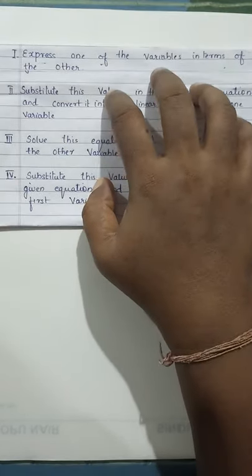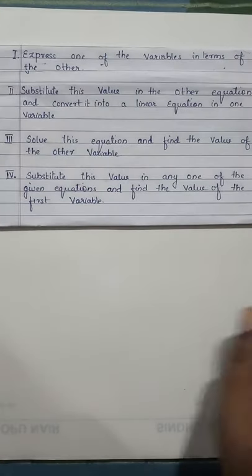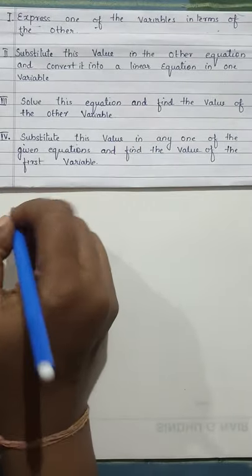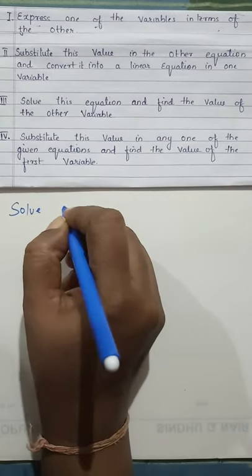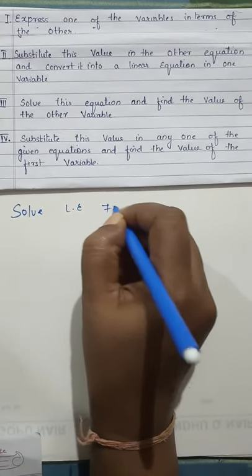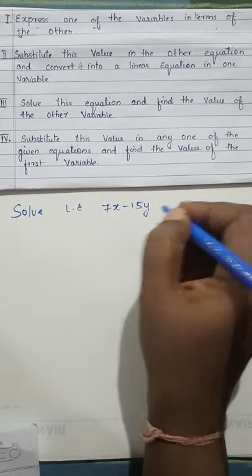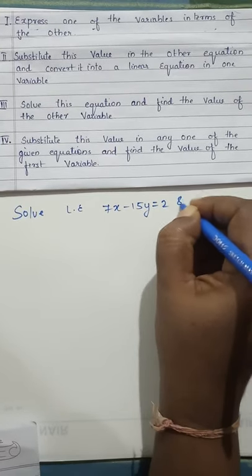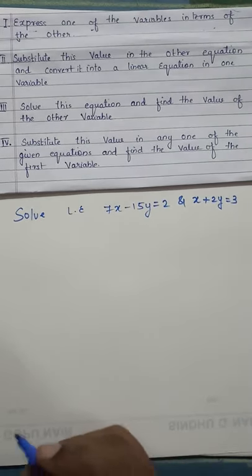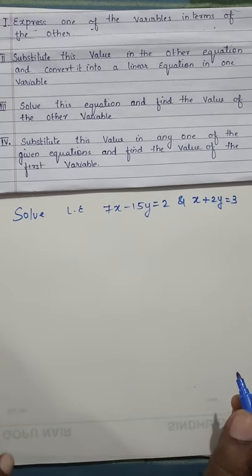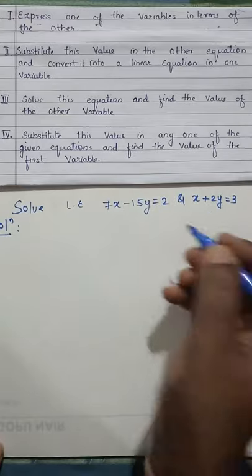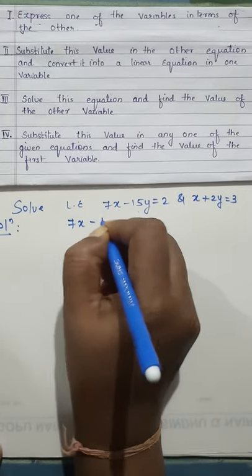Now I will explain these steps using an example. Let me take an example. Solve linear equation 7x minus 15y equal to 2 and x plus 2y equal to 3. This is our question. We have to solve by substitution method. For solution, first write the equation and number them.